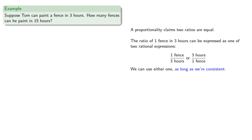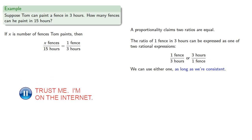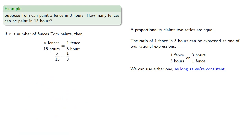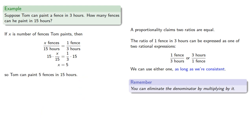We can use either form as long as we are consistent. So if x is the number of fences Tom paints, then the ratio x fences per 15 hours must equal one fence per three hours, since fences are in the numerator and hours in the denominator. Then we solve x/15 equals 1/3. We can eliminate the denominator by multiplying both sides by 15, and so Tom can paint five fences in 15 hours.